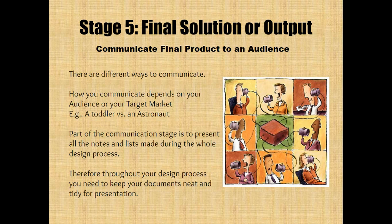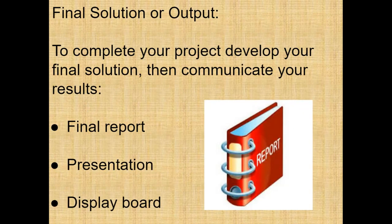Stage five is the final solution or output. This is where you're communicating your final product to an audience. There are different ways to communicate — how you communicate depends on your audience or target market, for example whether you're marketing towards toddlers or an astronaut. Part of the communication stage is to present all notes and lists made during the whole design process in your engineering design notebook. Throughout your design process, keep your documents neat and tidy. You can communicate your results one of three ways: a final report, a presentation, or a display board.